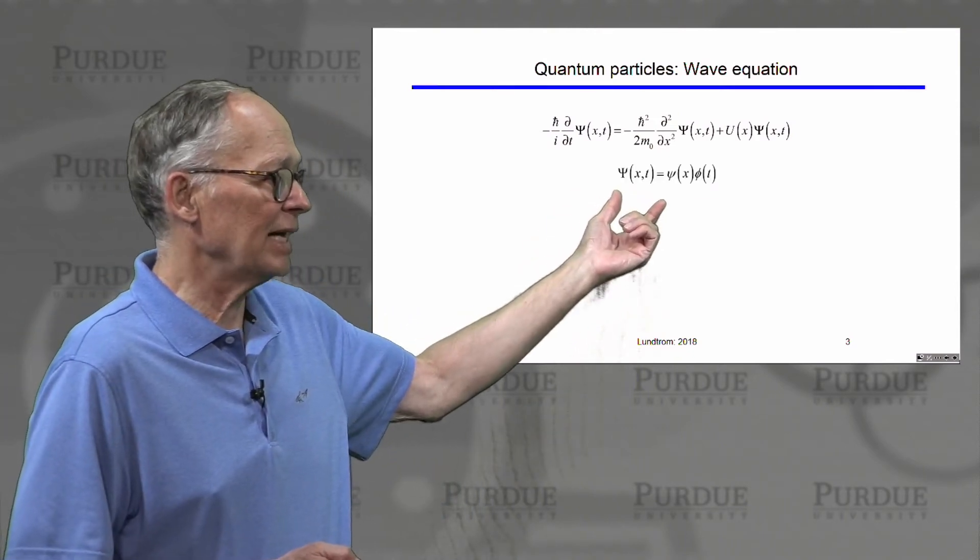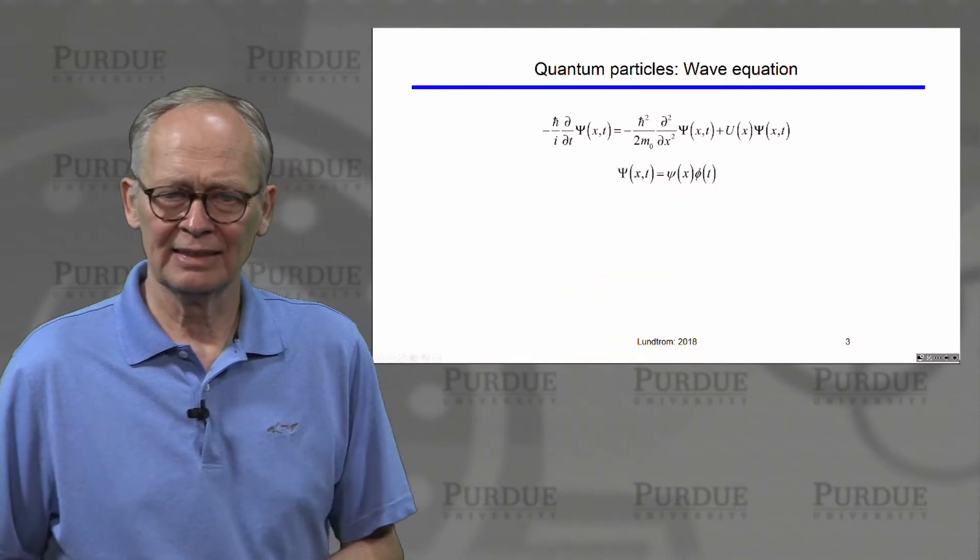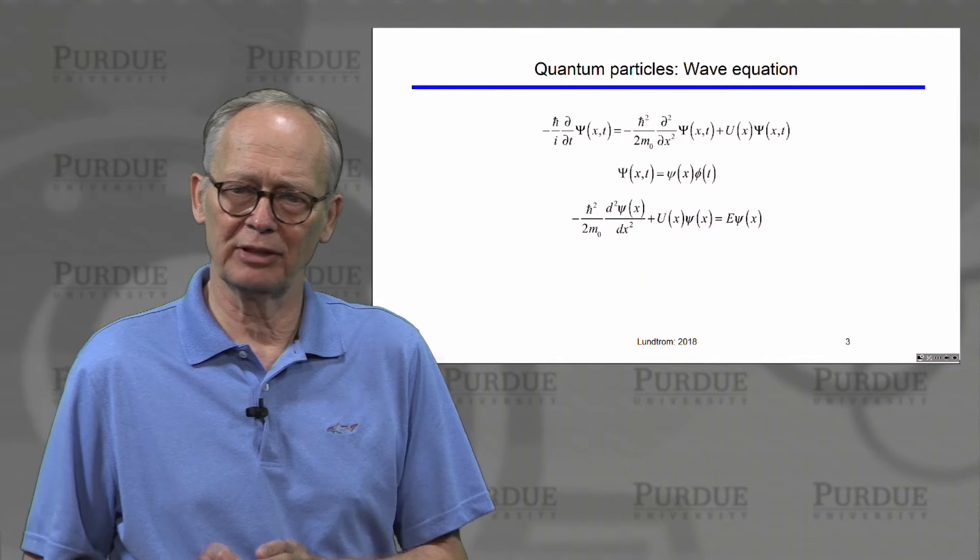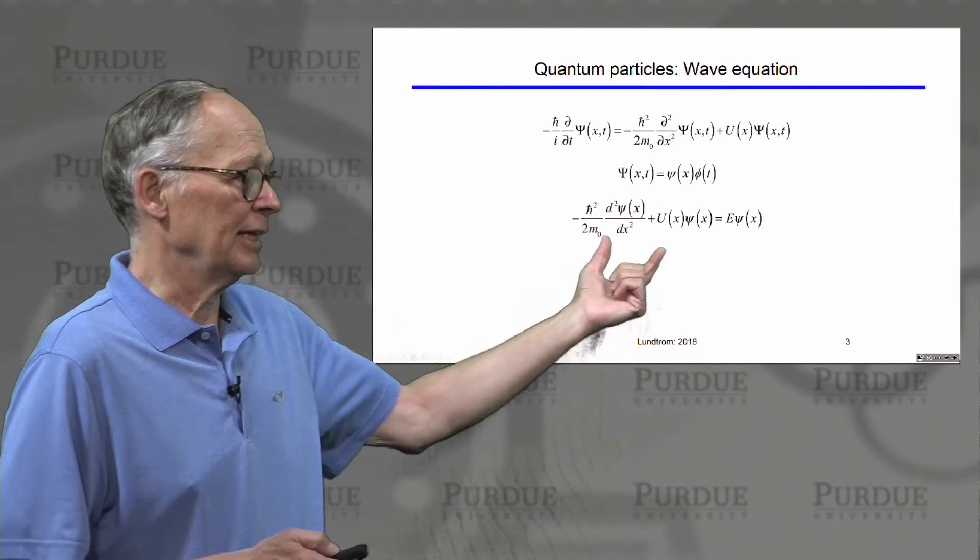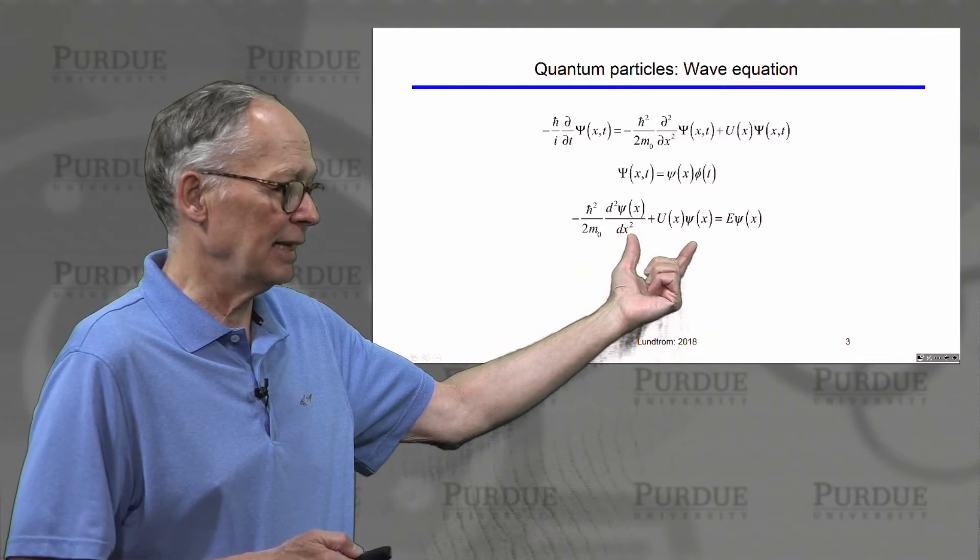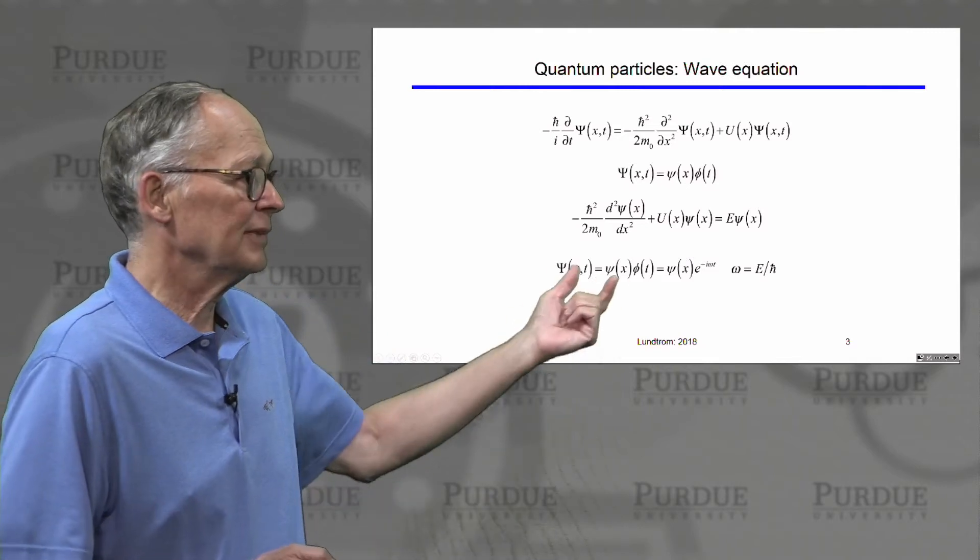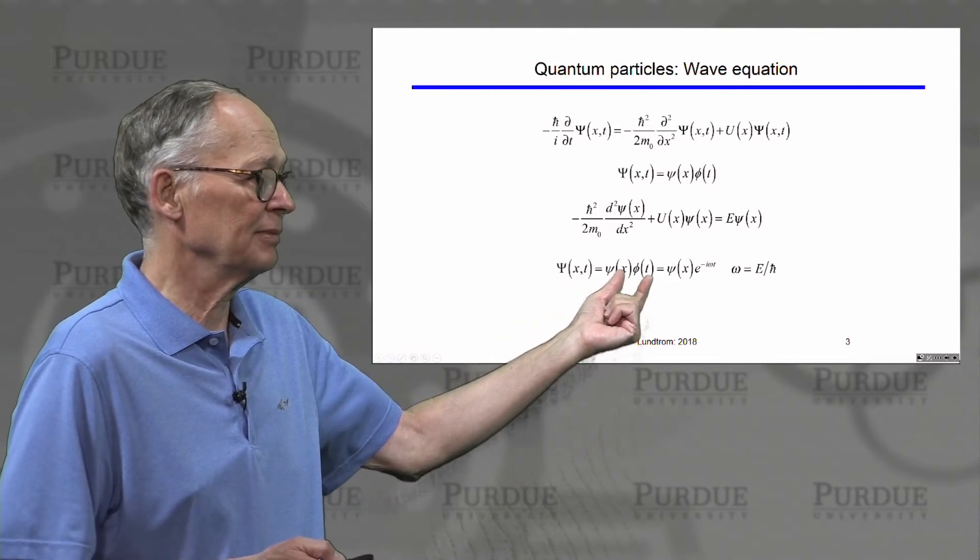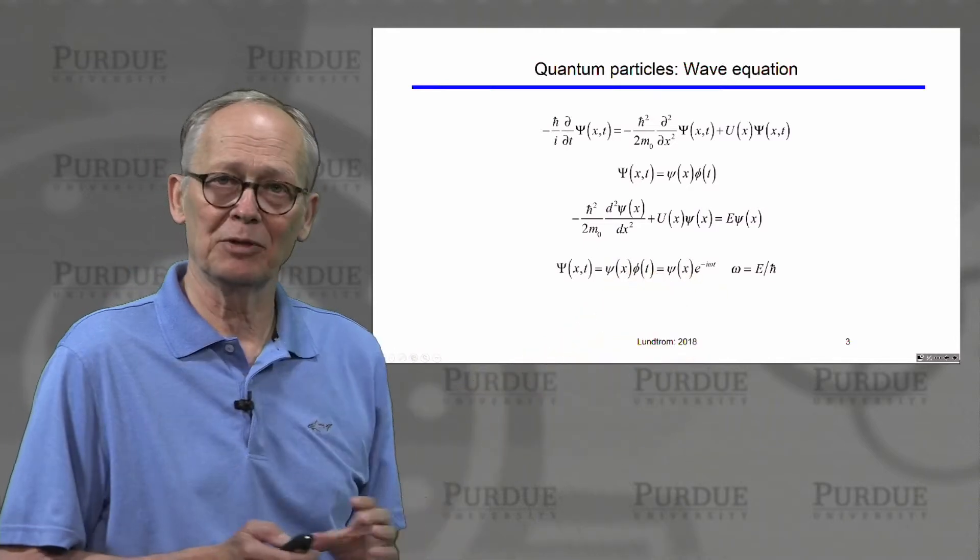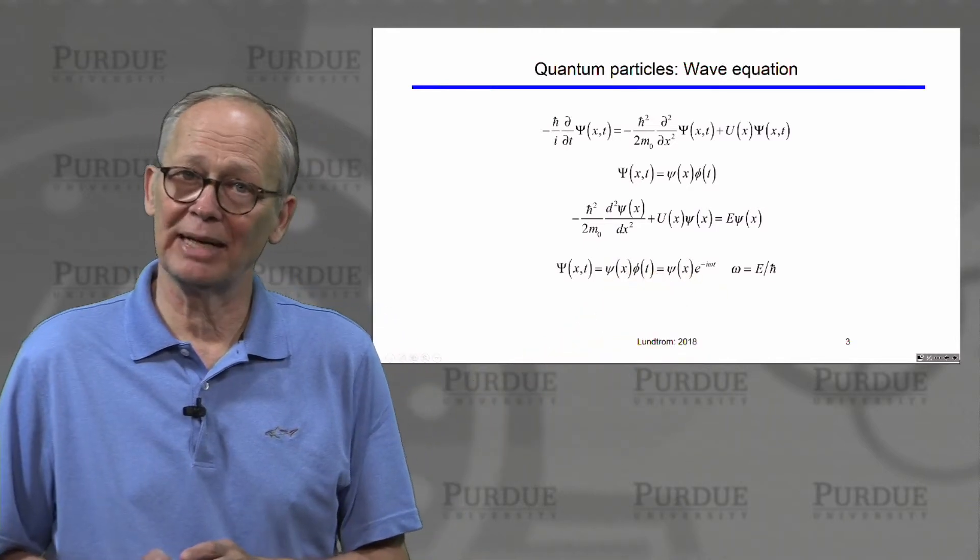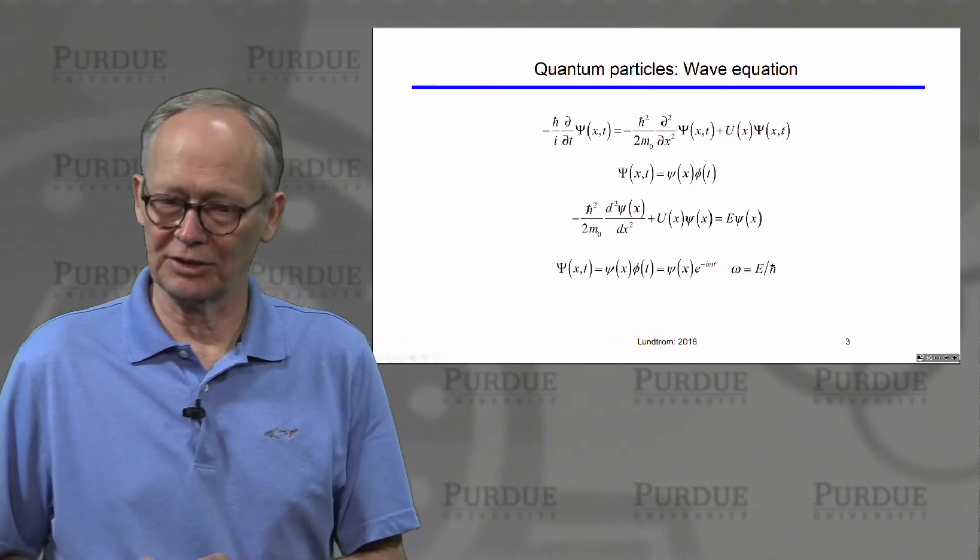The wave equation can be factored into a space-dependent part and a time-dependent part. This is a technique called separation of variables that's used to solve differential equations of this kind. The equation separates then, and this is the space-dependent part of the equation. The total solution is the solution to that equation times the solution to the time-dependent equation. The solution to the time-dependent equation is just e to the minus i omega t. And omega is equal to energy divided by h-bar.